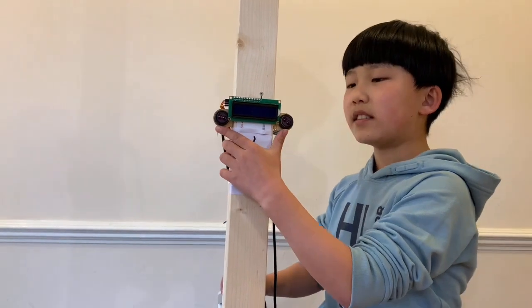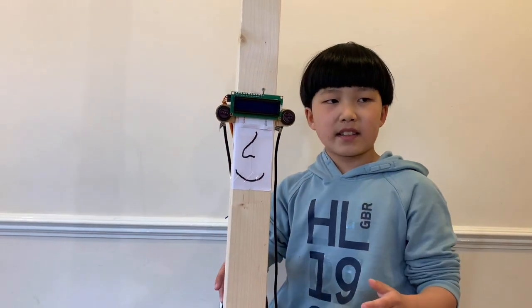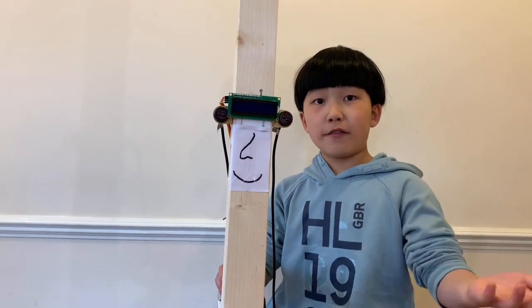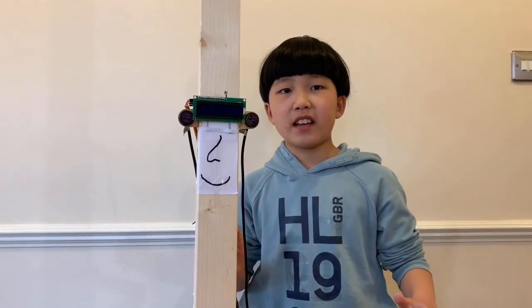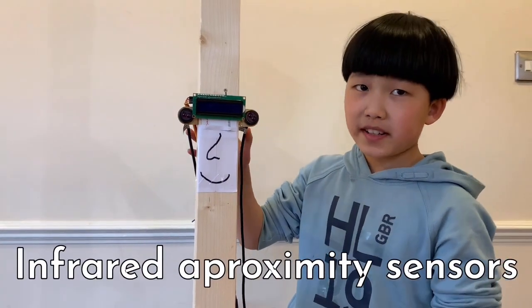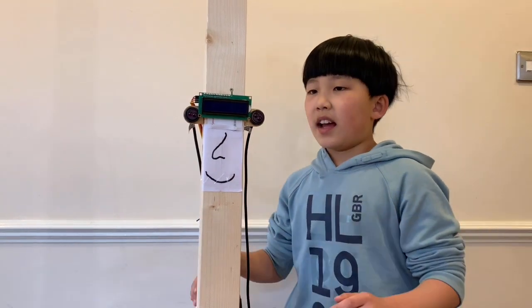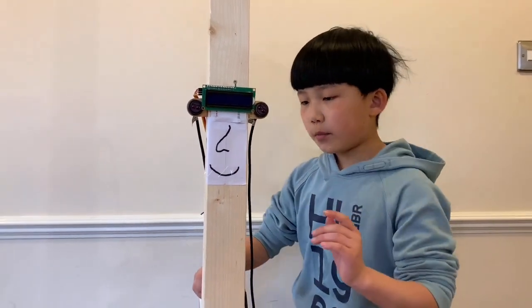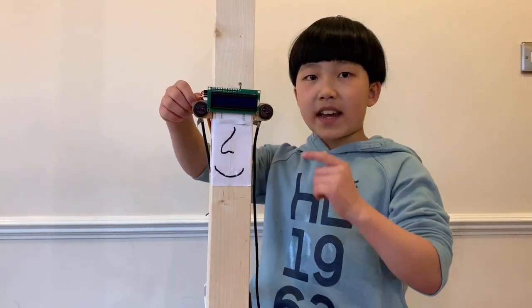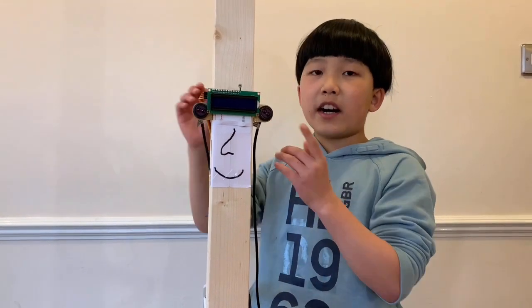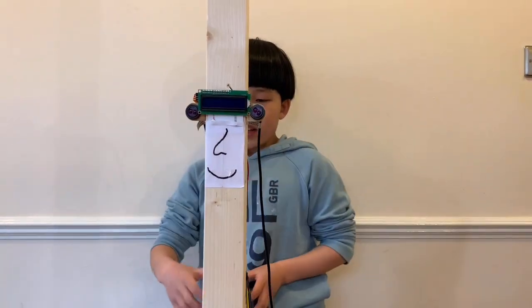So this is an LCD and these are two sensors which can detect objects in front of it. To be more specific, the infrared proximity sensors. We have named this sensor sensor A and this sensor sensor B, very interesting names.